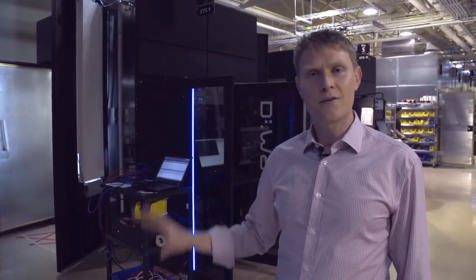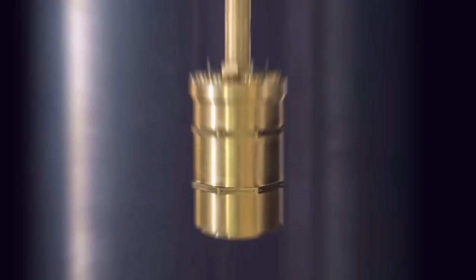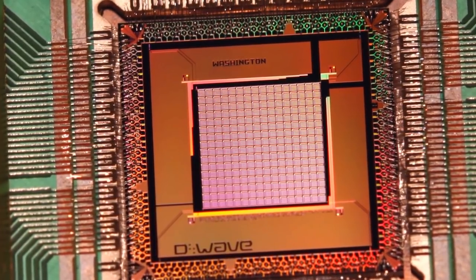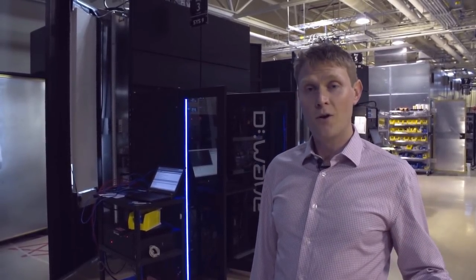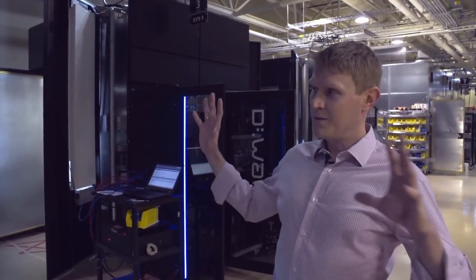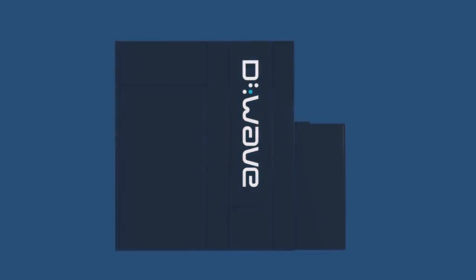Each of these black systems is a quantum computer. Inside that system is a thumbnail-sized quantum processor. In order to operate and develop quantum processors, we require a fairly extreme operating environment, which includes ultra-low temperatures and an ultra-low magnetic environment. And to achieve those, we need a fairly large and sophisticated system.